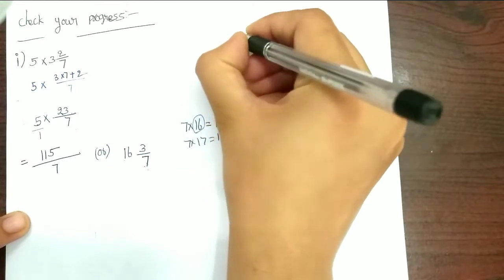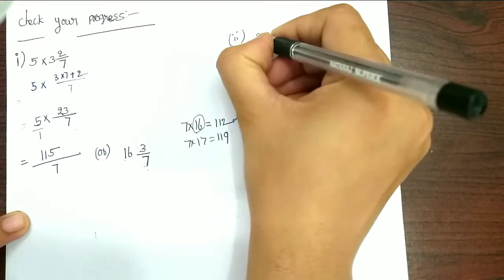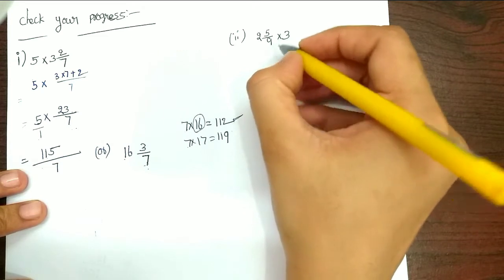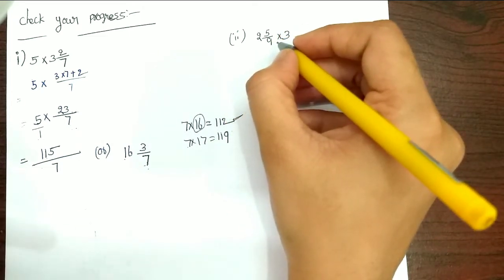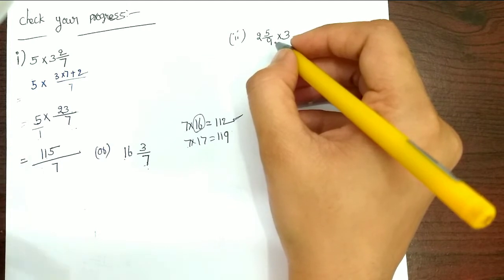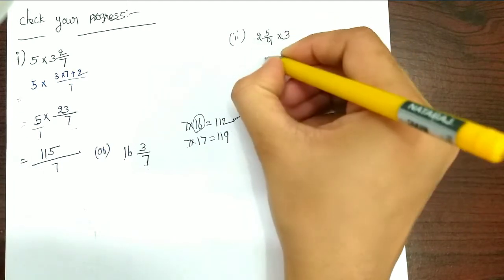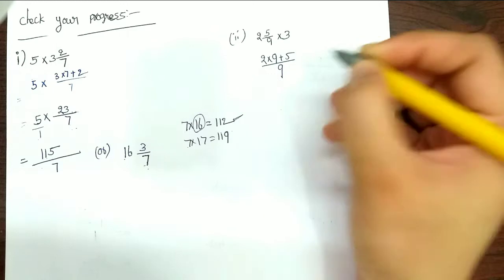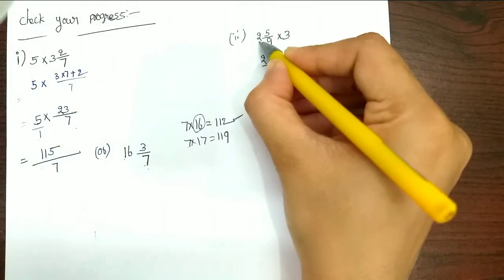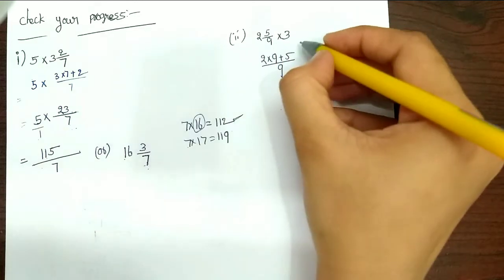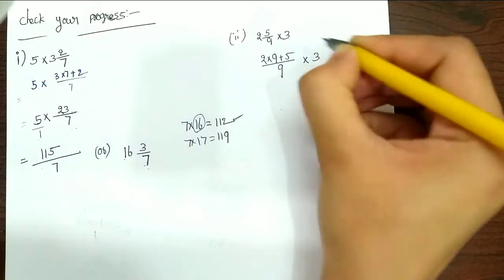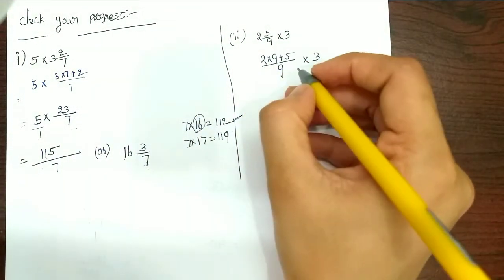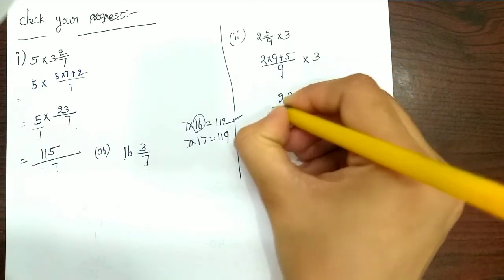The second problem is: 2 and 5/9 into 3. So next, we convert the same mixed fraction. First of all, we convert: 2 into 9 plus 5 by 9 — denominator times the before number, multiply, then add the numerator. So 2 times 9 is 18, plus 5 is 23 — so 23 by 9.